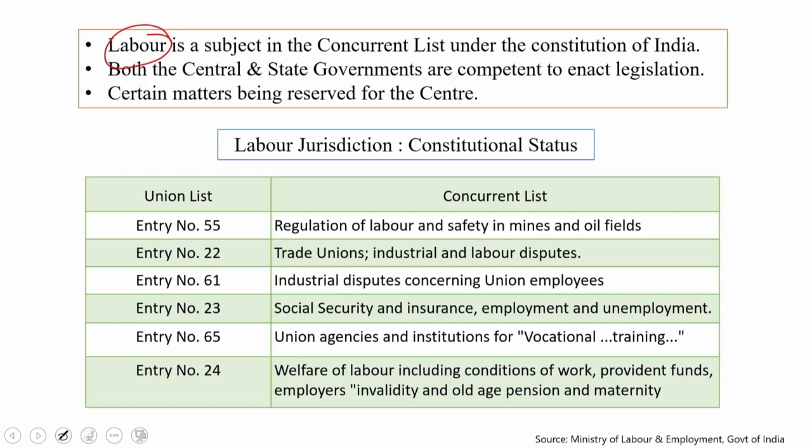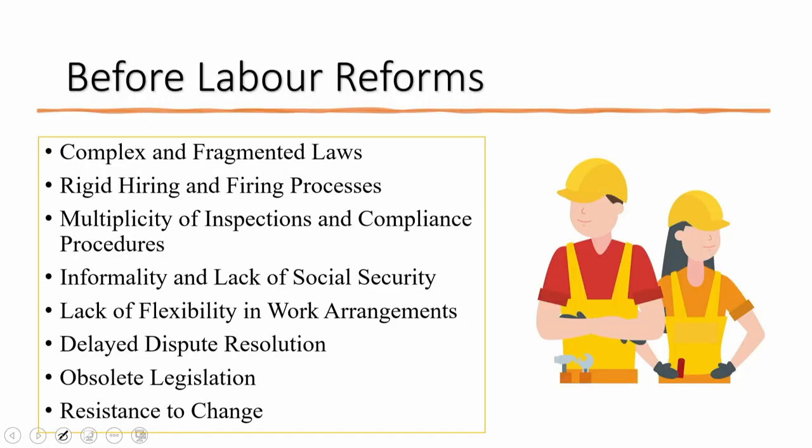Certain matters are reserved for the center. When looking at the union list and concurrent list entries: Entry 55 covers regulation of labor and safety in mines and oil fields; Entry 22 covers trade unions and industrial and labor disputes; Entry 61 covers industrial disputes concerning union employees; Entry 23 covers social security and insurance including employment and unemployment; Entry 65 covers union agencies for vocational training; and Entry 24 covers welfare of labor including conditions of work, provident fund, employers' invalidity, old age pension, and maternity benefits.